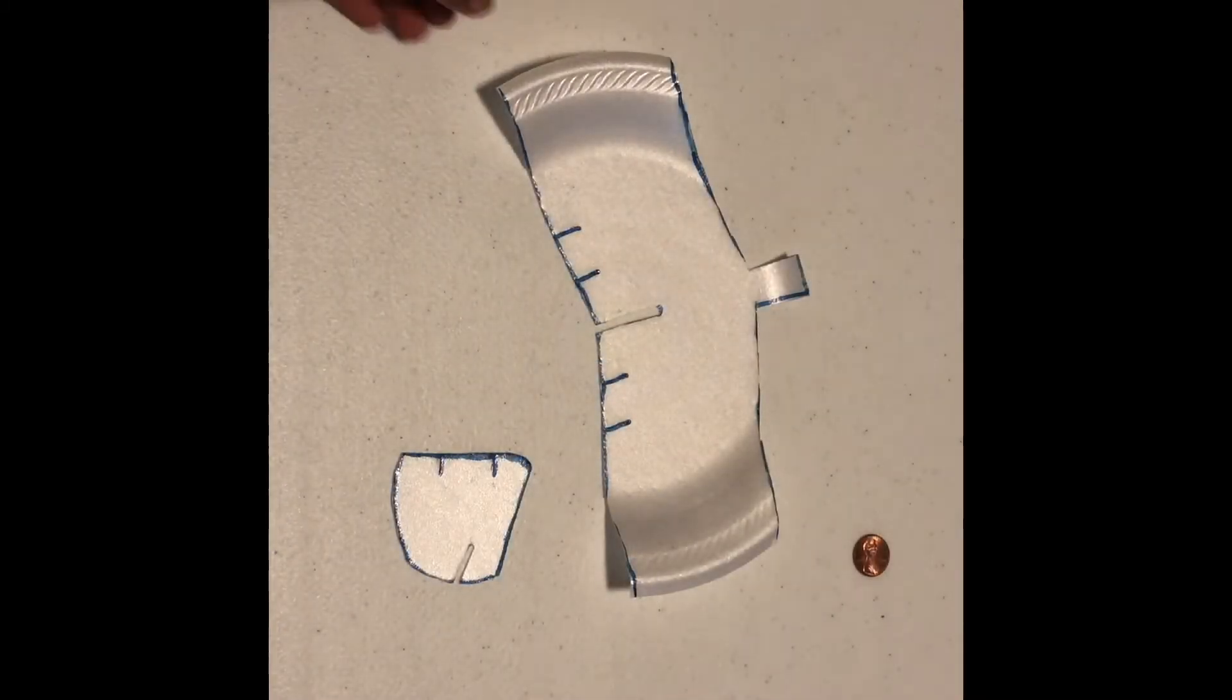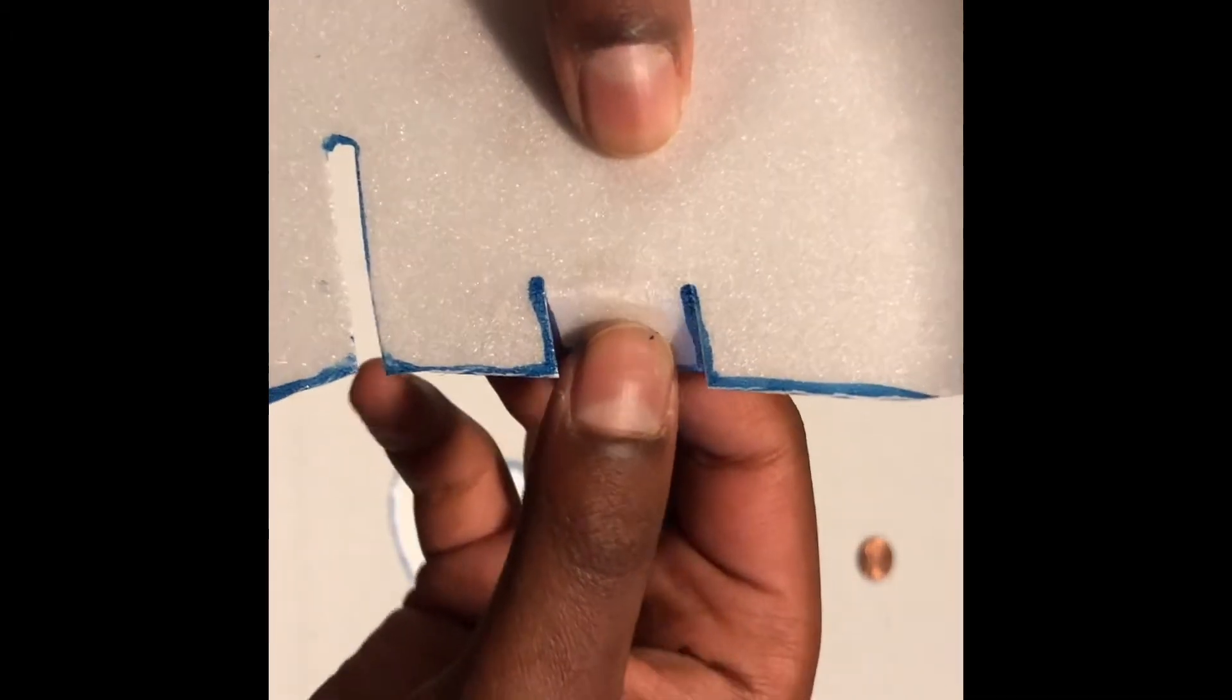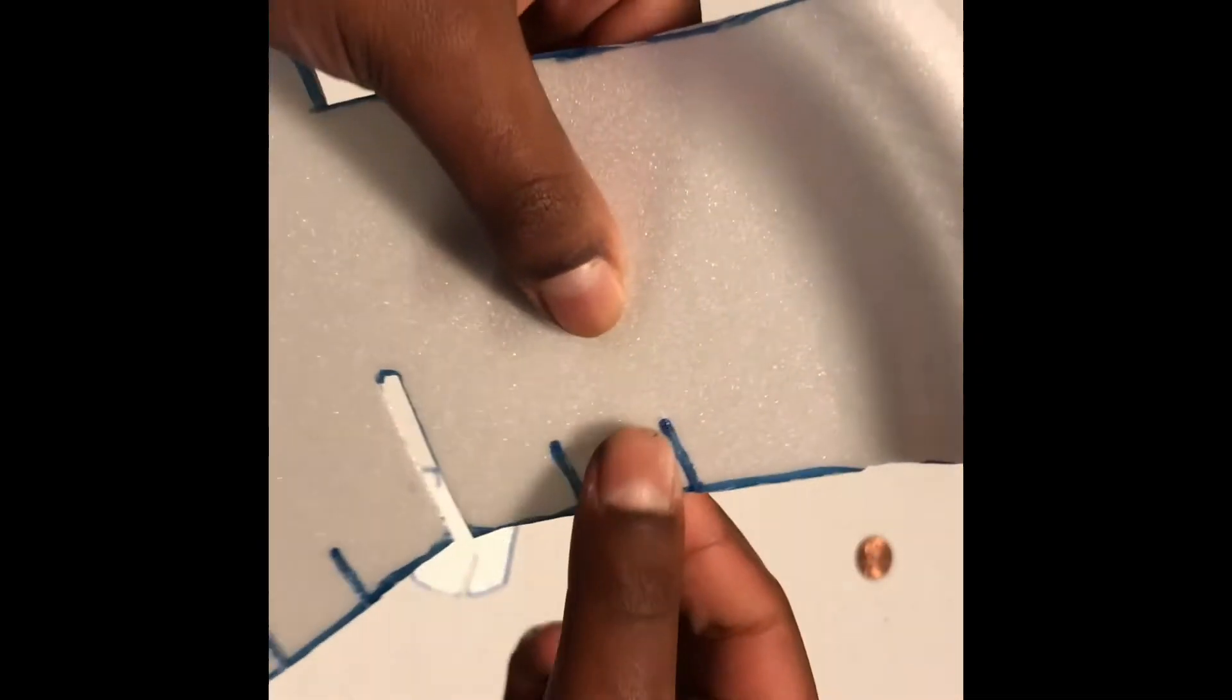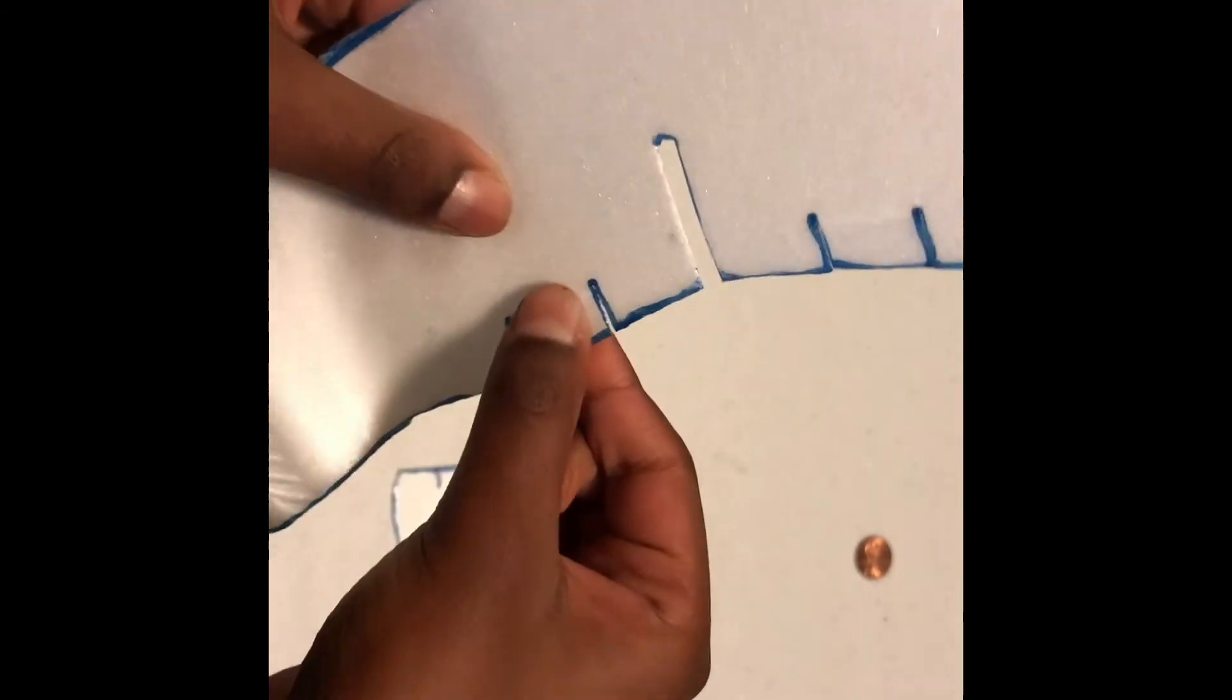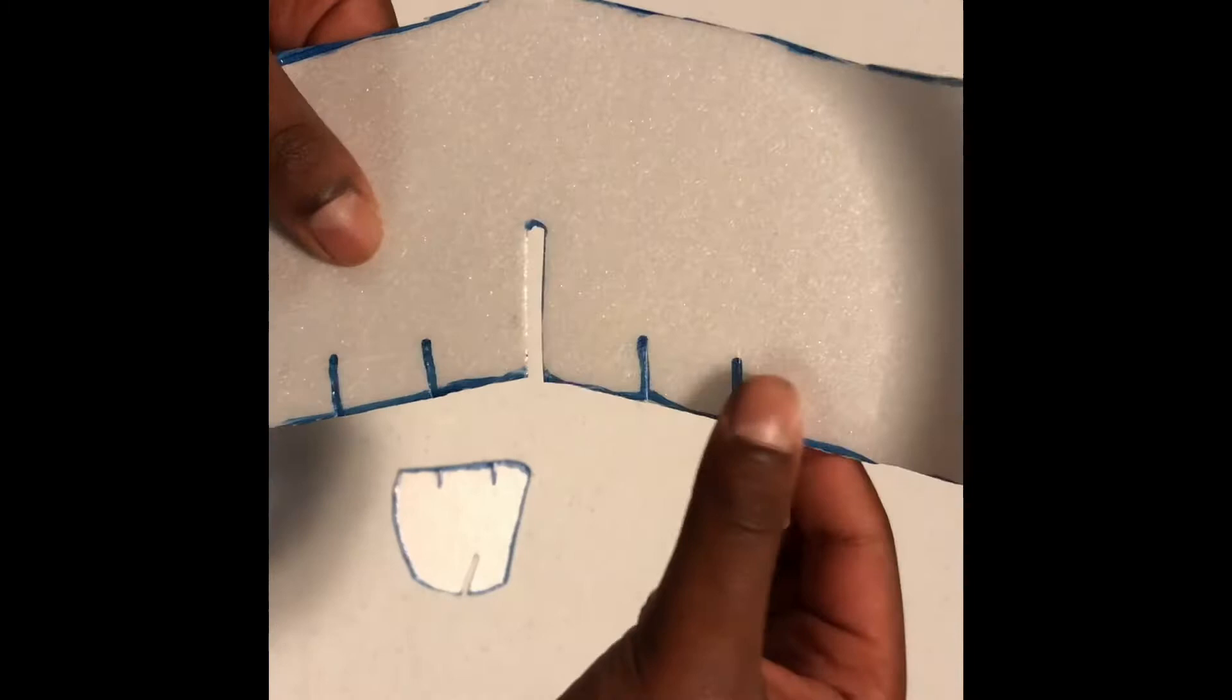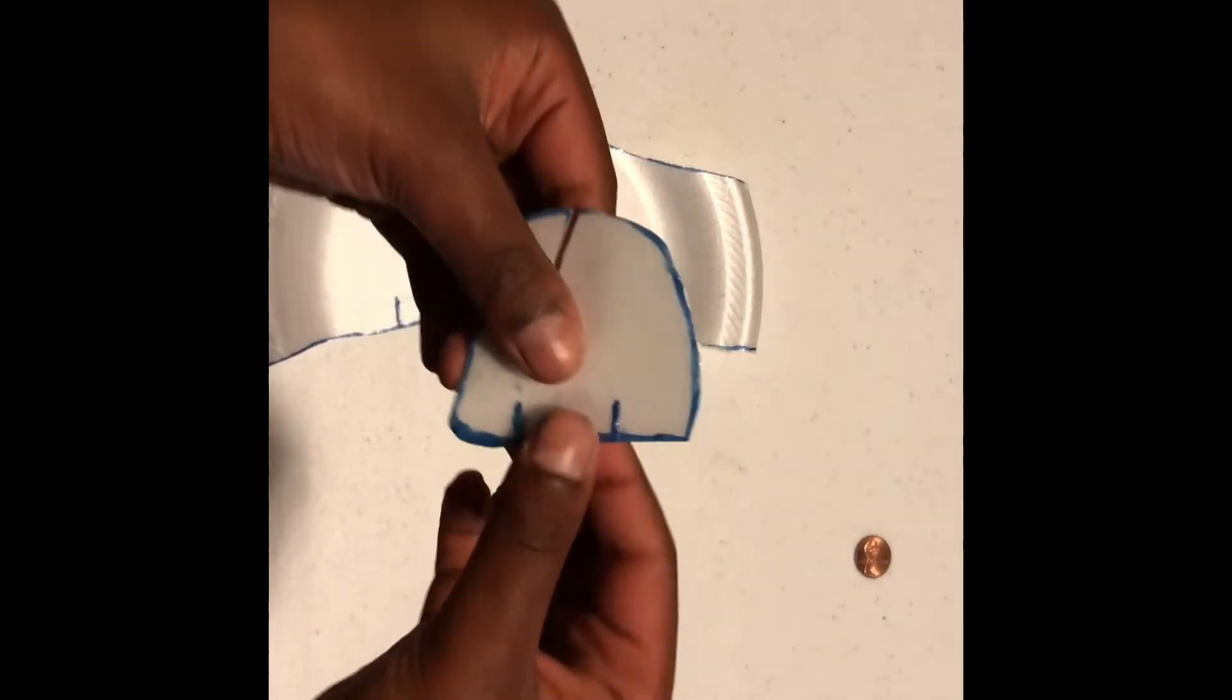Now you're done cutting out all the foam stuff. You want to carefully bend these flaps slightly, not too hard or else it will pop out and break. Just push them around a little bit so they get easier to move on both of them.